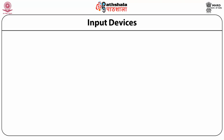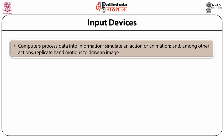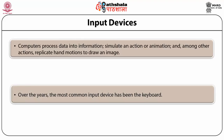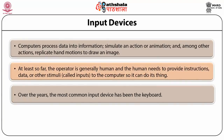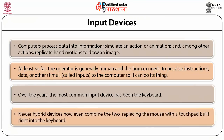We can see the illustration between input and output devices and how storage devices act as the mediator for better processing, holding short-term or long-term memory. A computer processes data into information, simulates actions or animations, and replicates hand motion to draw an image. Each process requires some form of interaction with an operator. An operator — generally a human — needs to provide instructions, data and other stimuli called inputs to the computer. To facilitate these actions, computers must provide input devices. Over the years, the keyboard has been the most common input device, though recently it has been a close contest with the mouse. Newly hybrid devices now even combine the two, replacing the mouse with a touchpad built right into the keyboard.